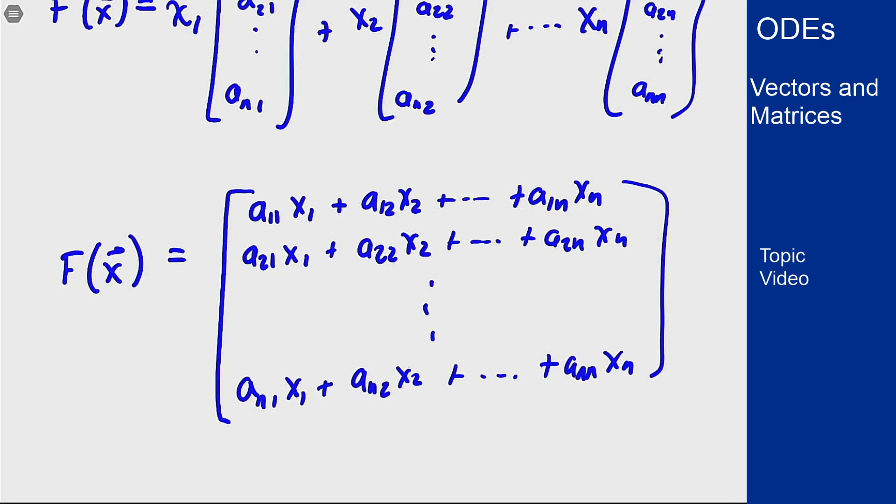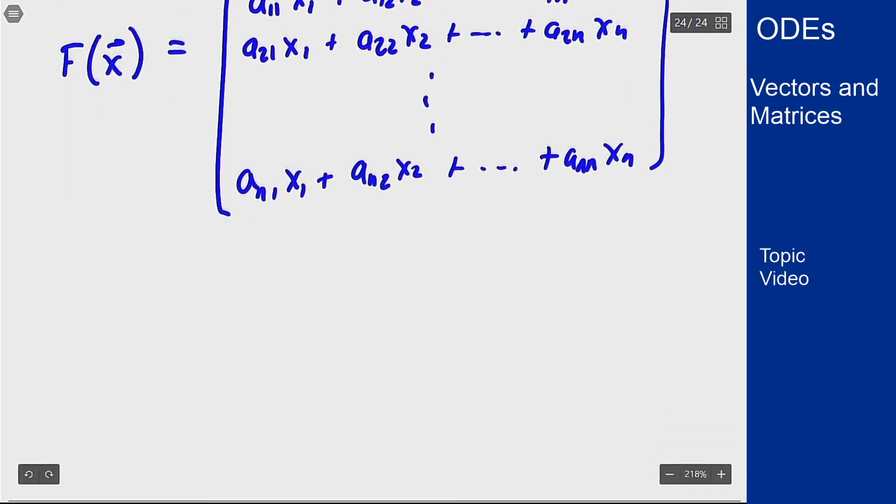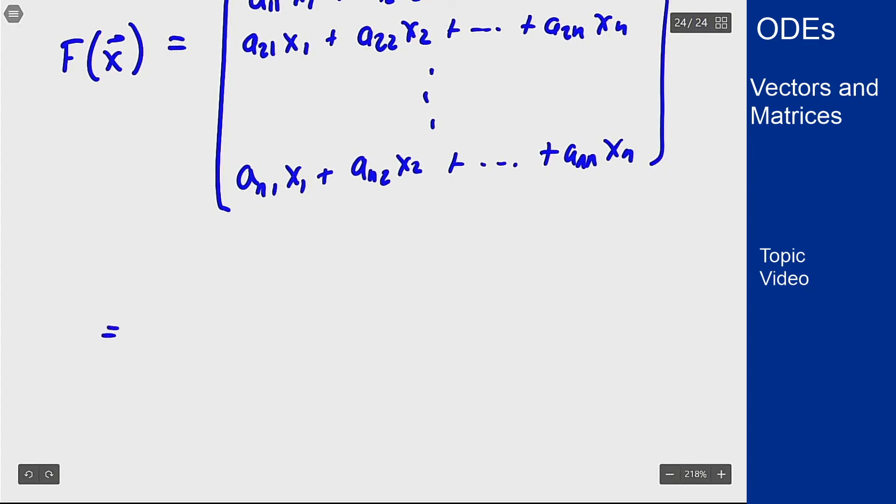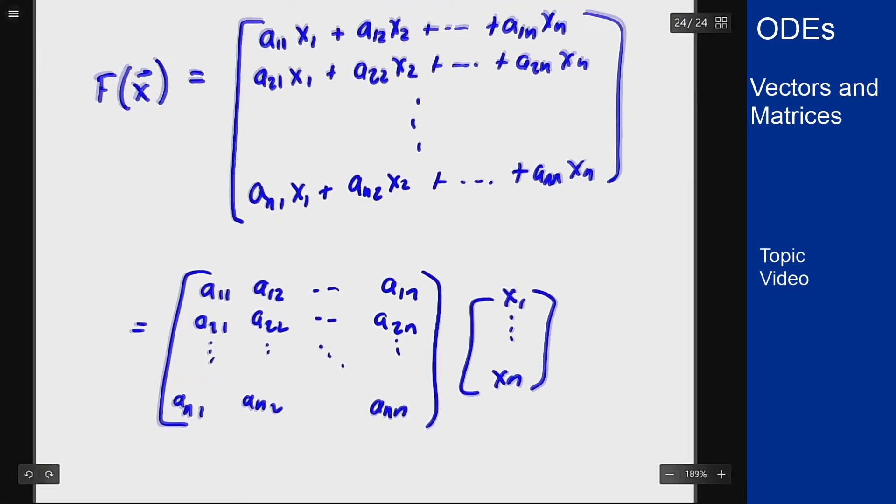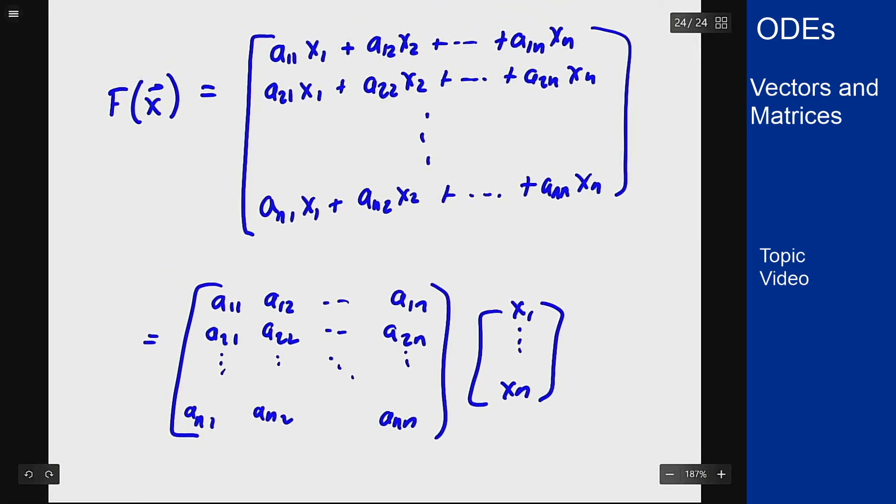If you stare at this long enough, each of these look like dot products with a vector x. If I pull out the matrix part, this is the same thing as writing the structure: the matrix [a11, a12, ..., a1n; a21, a22, ..., a2n; ...; an1, an2, ..., ann] times the vector [x1, ..., xn]. If you do that multiplication out the way matrix multiplication works, you get exactly this f(x) from above.